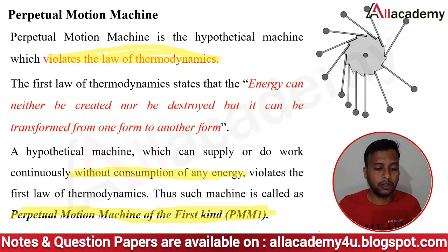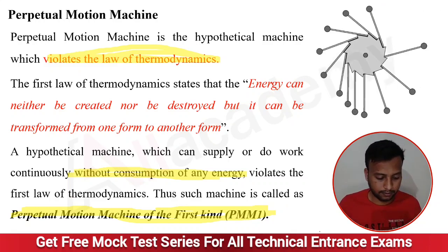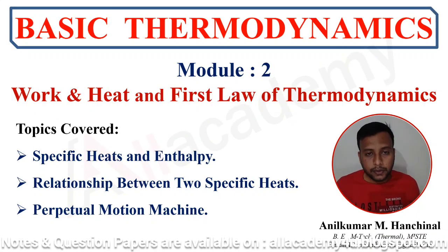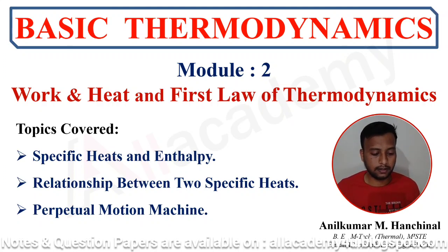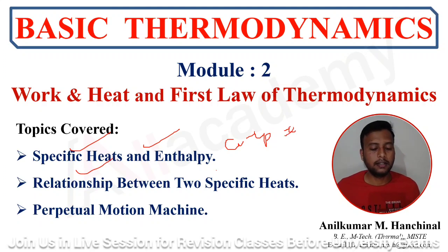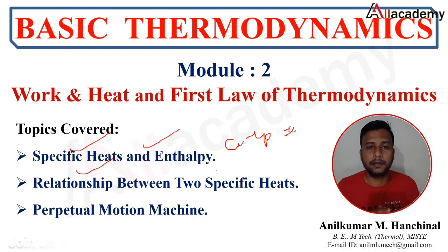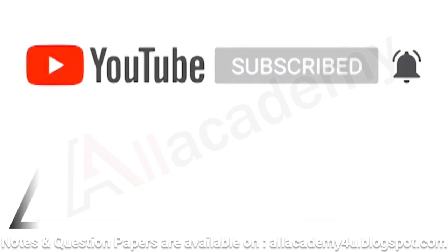I hope you have understood today's topics. To summarize, we discussed specific heat, enthalpy, the relation between the two specific heats (Cp - Cv = R), and perpetual motion of the first kind. If you have any difficulties, please comment in the comment box and we will try to clarify your doubts. Click the subscribe button and press the bell icon to get updates from OL Academy.